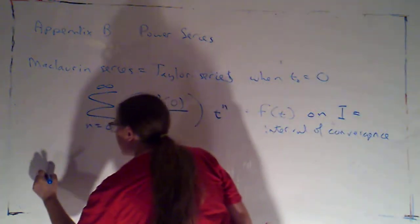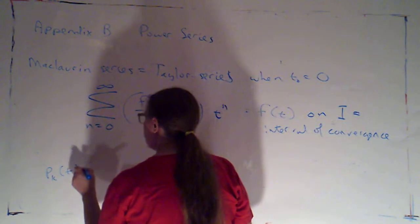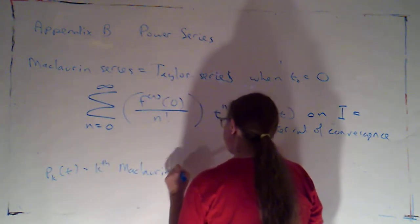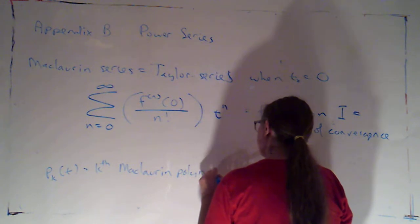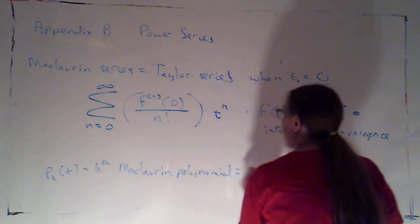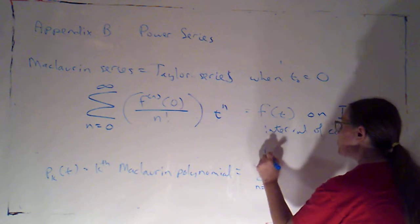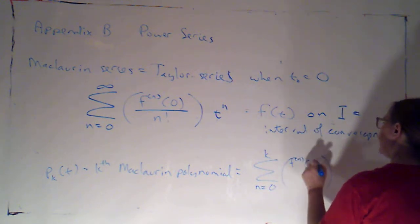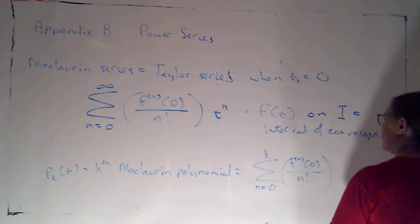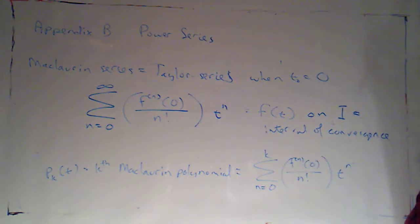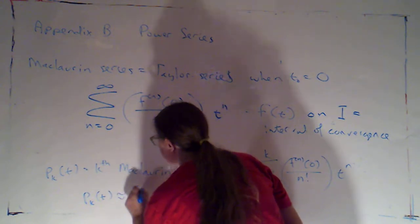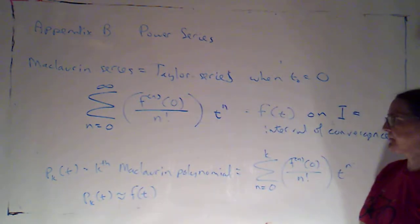We can also talk about p sub k of t, the kth Maclaurin polynomial. That's the sum as n goes from 0 to k of the nth derivative at zero, divided by n factorial, times T to the n. Our hope is that p sub k of t will be approximately the same as f of t.